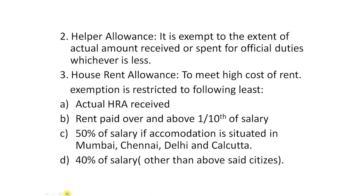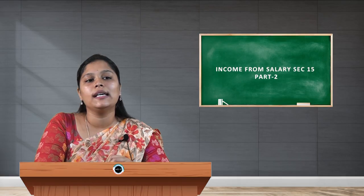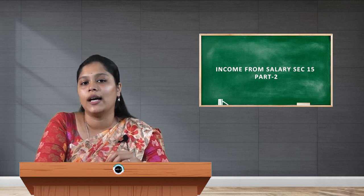Last one: house rent allowance. House rent allowances are provided to meet the high cost of rent. Exemption is restricted to the least of the following: actual HRA received; rent paid over and above one-tenth of salary; 50% of salary if accommodation is situated in Mumbai, Chennai, Delhi, and Calcutta; or 40% of salary for cities other than the above. So, this covers all the information with respect to allowances.